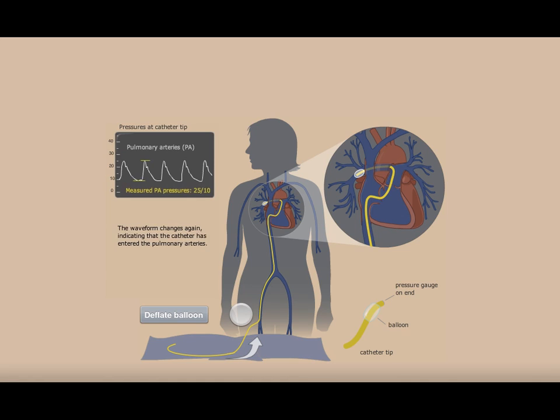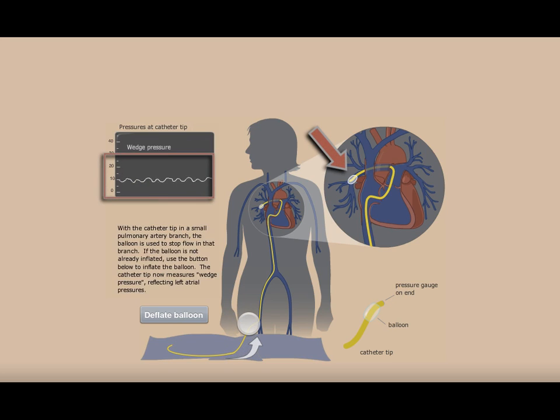If you now thread the catheter as far as you can so the balloon wedges into a small pulmonary artery, you can see the pressure drop as the balloon wedges. This wedge pressure reflects the pressure in the left atrium time delayed a bit because of the distance, given that there is temporarily no blood flow beyond the tip of the catheter, and hence no pressure drop between there and the left atrium.